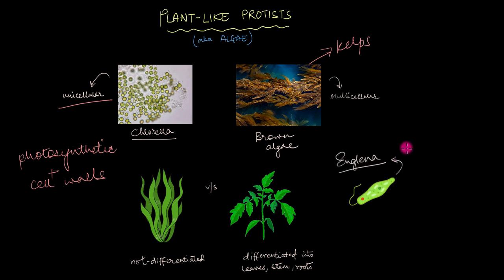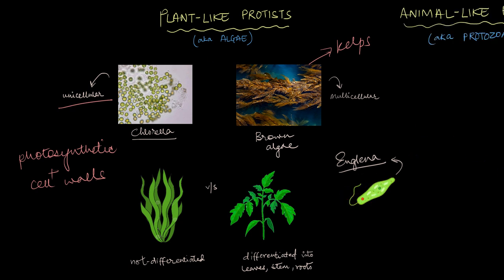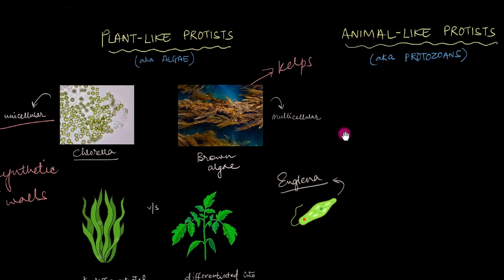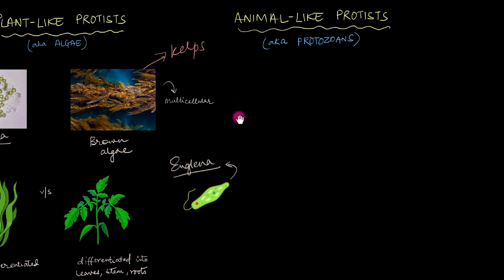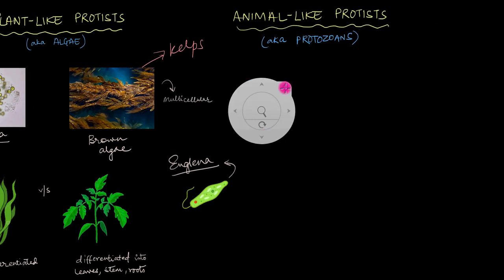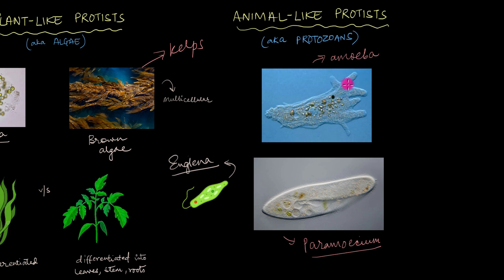Besides algae, Euglena is also a plant-like protist, but Euglena has the best of both worlds — it can behave like a plant and an animal — which brings us to animal-like protists, aka the protozoans. This includes all the amoebas, then this paramecium right over here, then there's also the malarial parasite plasmodium, which is also a protozoan, and a bunch of different other organisms as well.